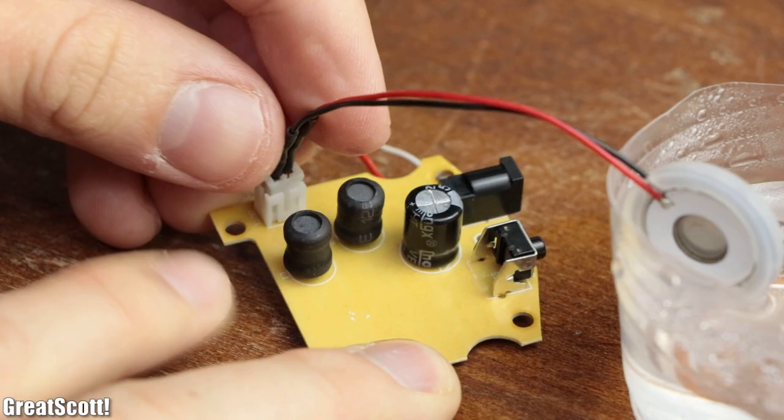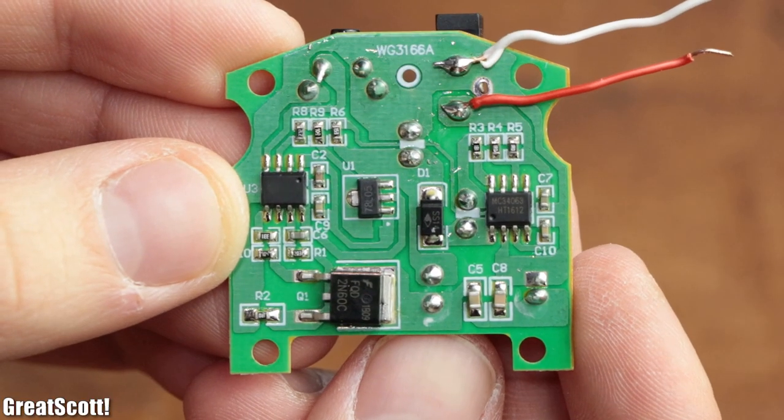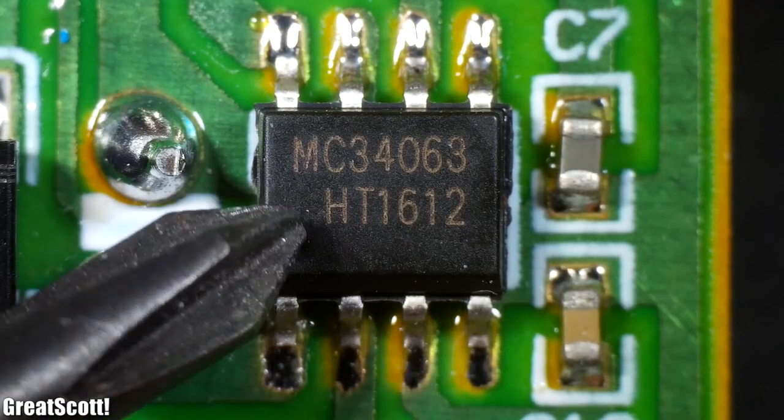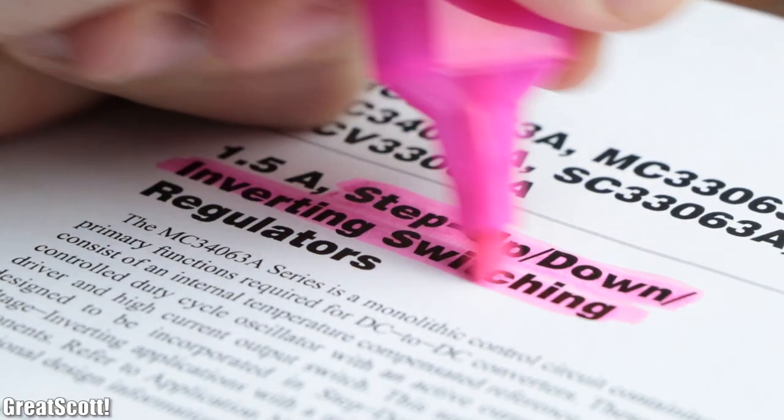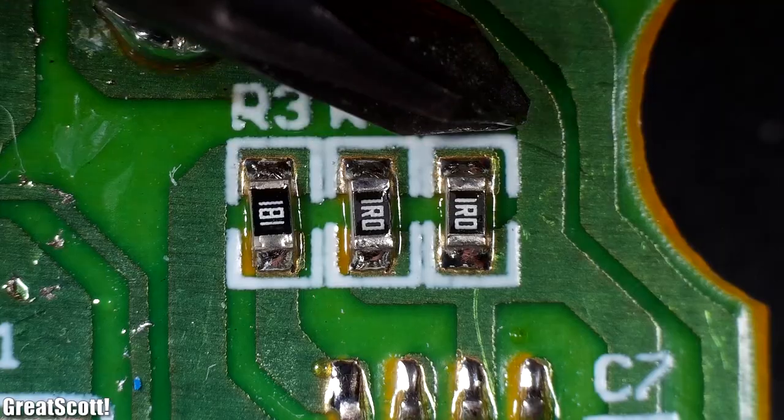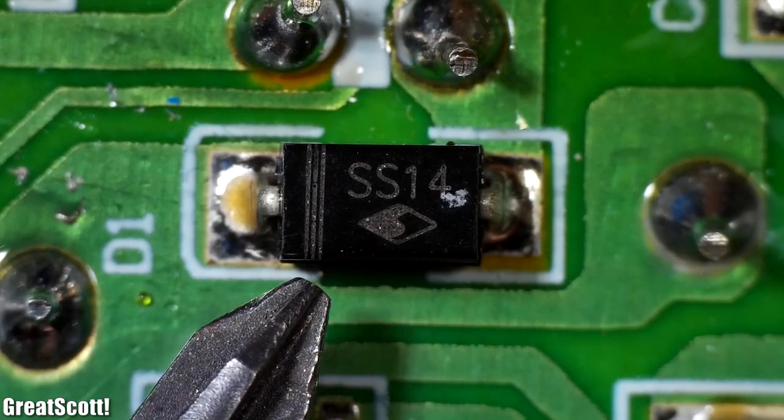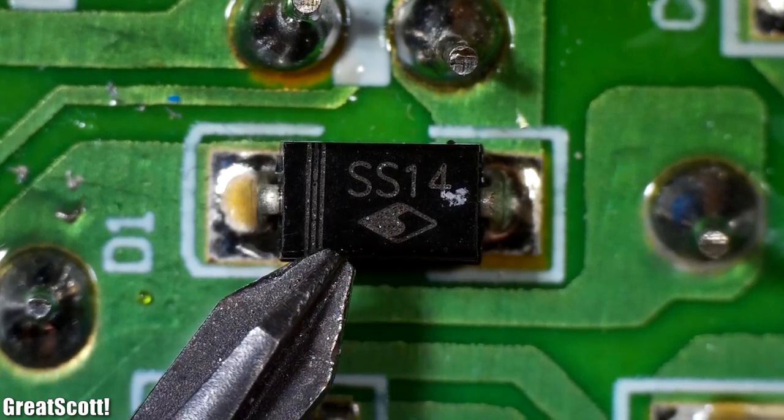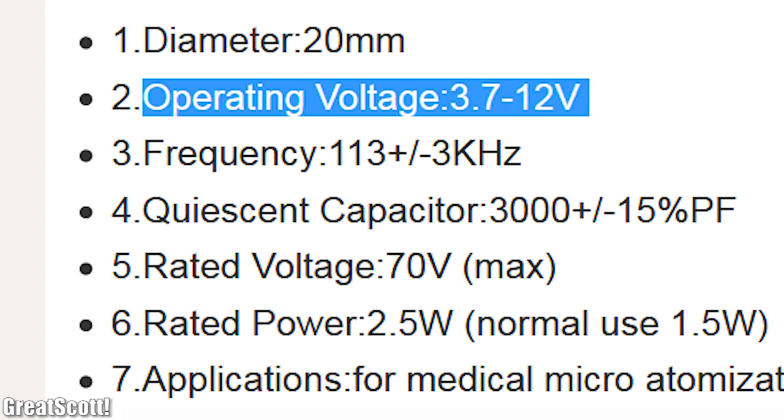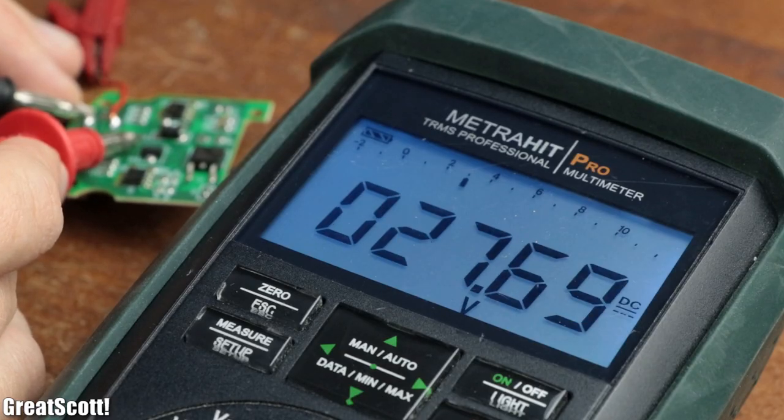But let's firstly inspect the ICs and components on the PCB to understand how the circuit works. The first IC here is a MC34063, which is a step up slash down switching regulator. In combination with a couple of passive complementary components, and most importantly a Schottky diode and an inductor on the other side, it turns the 3.7 volts to 12 volt input voltage into a constant 28 volts output voltage.